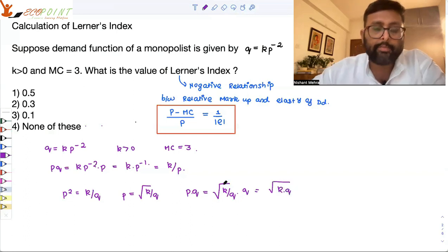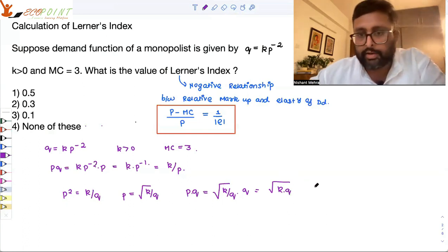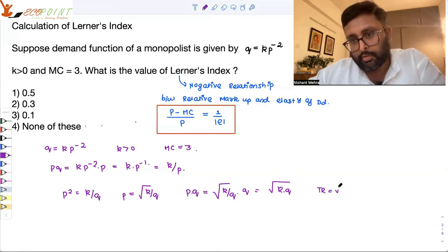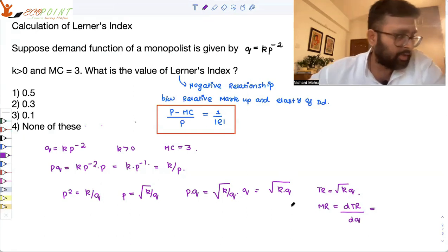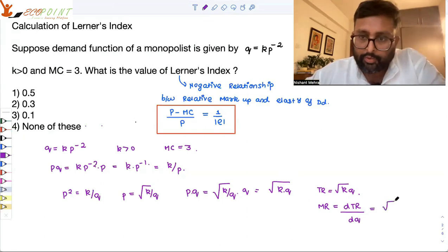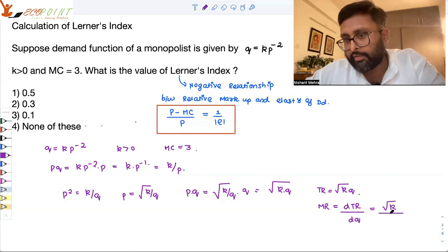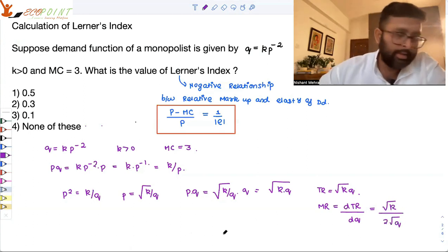Why I am doing this? Because I need to find out that price where MR is equal to MC. This is what my total revenue is. What is MR? dTR by dq. So that will come out to be, root k is a constant, root q per derivative is 1 upon 2 root q.